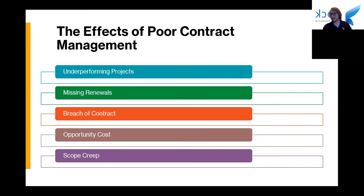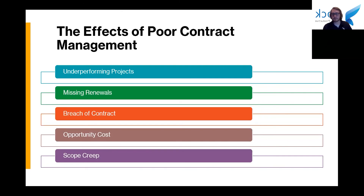Another issue — and the one people generally think of when it comes to poor contract management — is a breach of contract. If you're not accurately tracking and managing your contracts, you might not be delivering on something you needed to deliver. Other parties may also have deliverables they're not fulfilling, and you're missing it. A breach of contract can be a major issue where you have the opportunity to break a contract if you're not happy, but since you're not watching for it, you're stuck paying for subpar service. This can also lead to legal fees, damages, and regulatory fines.